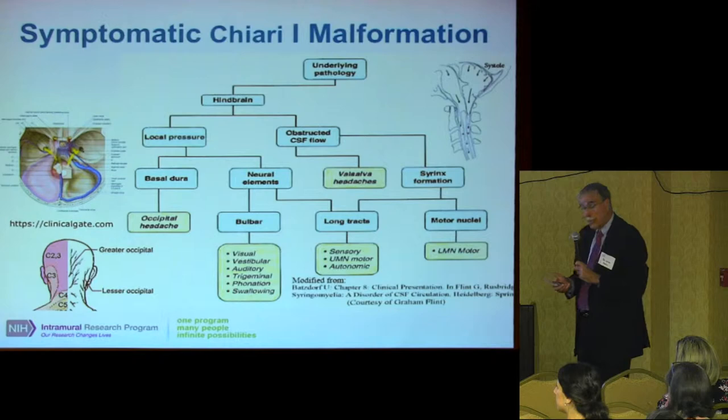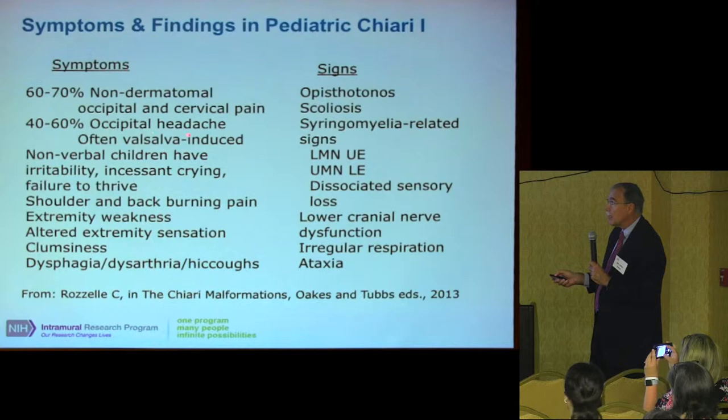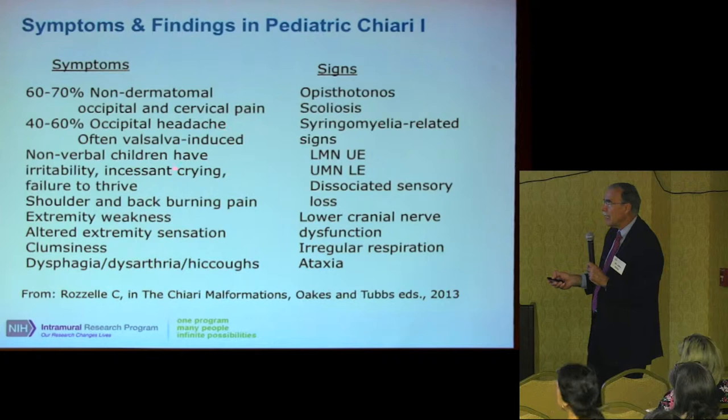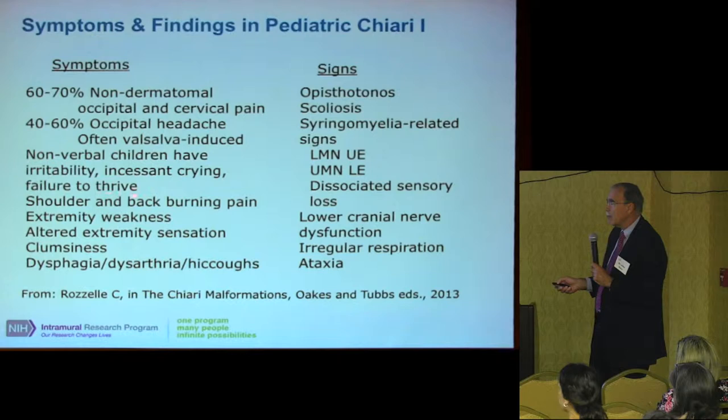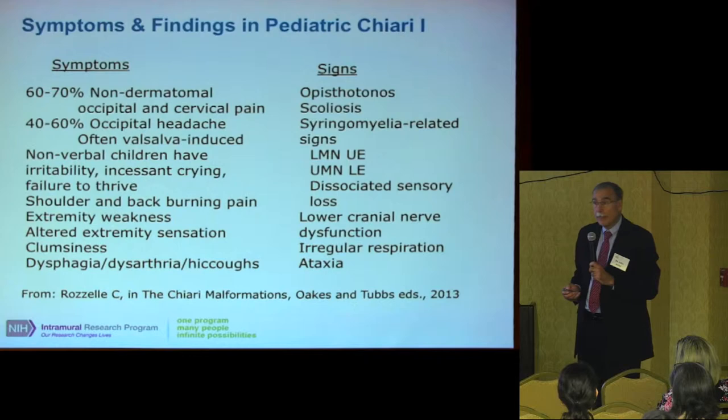In children it's a little bit different from adults, but not that much. About half of children have occipital headaches; others can have cervical pain in other parts of the neck. Children who are so young they're nonverbal may just have irritability, crying, or failure to thrive. Some have shoulder and back burning pain, syrinx-related symptoms, and lower cranial nerve dysfunction that usually comes from the Chiari itself.